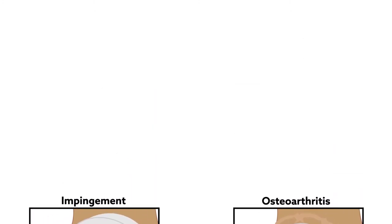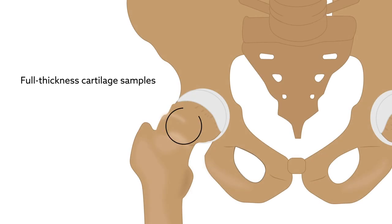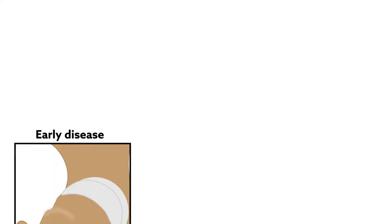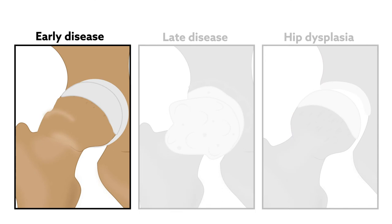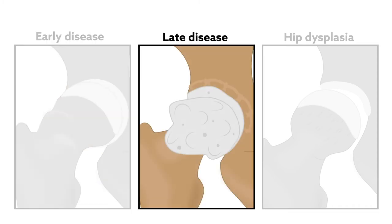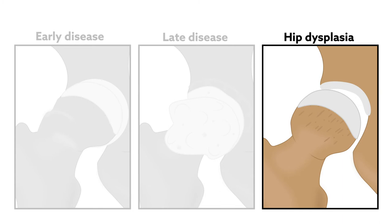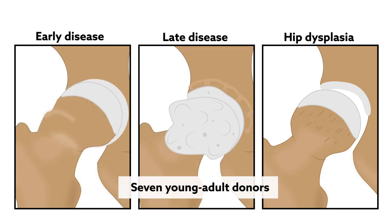The research team examined full-thickness cartilage samples gathered from the zone of impingement in 45 patients undergoing hip surgery. Reasons for surgery fell into one of three groups: early disease, late disease, or hip dysplasia. Early disease referred to symptomatic cam impingement, which describes the overgrowth of bone across the femoral head, whereas late disease was defined as advanced osteoarthritis secondary to cam impingement. Patients undergoing treatment for hip dysplasia were included for comparison, as dysplasia represents a different degradation mechanism. Samples from seven young adult donors served as controls.